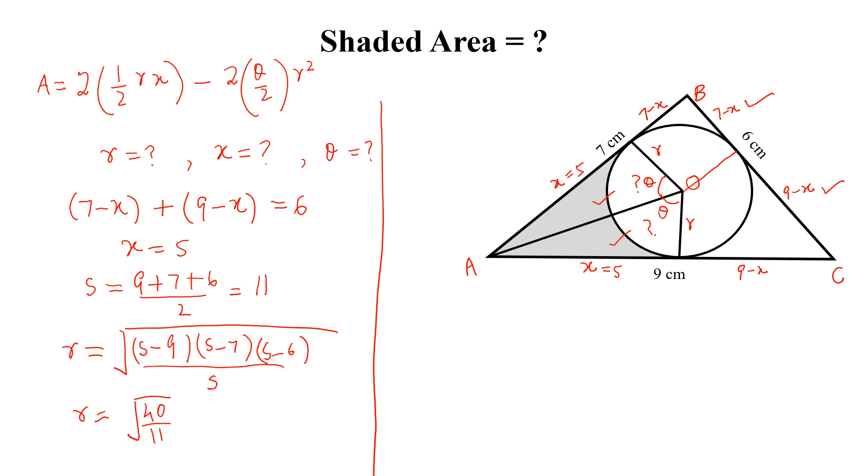Now, how we will calculate theta? Theta is equal to tangent inverse of X divided by R. So, X by R. If we put values here, theta is equal to tangent inverse of 5 into square root of 11 by 40. We can write in this form.